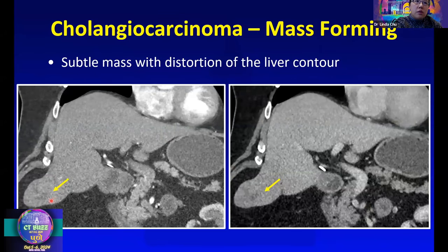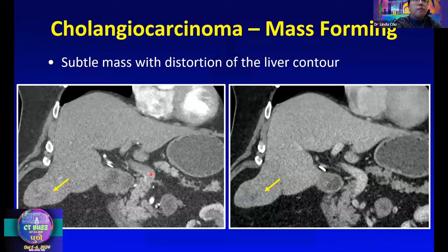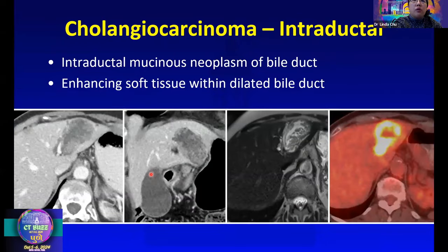Here is a rather subtle-looking mass — we can appreciate a heterogeneously enhancing lesion deforming the liver contour. If you see extra bumps of the liver contour, look very closely at the texture to make sure there isn't a mass there. This is the intraductal growth pattern of cholangiocarcinoma — they're kind of like IPMNs of the bile ducts. Because of high mucin content, you expect a very T2-bright lesion, heterogeneous enhancement, and it will be hot on PET.